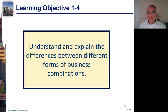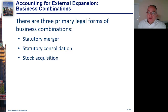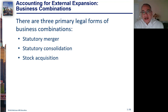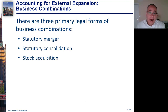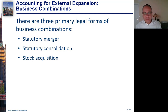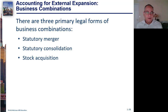Learning Objective 1-4: understand and explain the differences between different forms of business combinations. There are three different legal forms of business combinations: statutory merger, statutory consolidation, and a stock acquisition. This is a CPA exam question, so we'll go through these in some detail to understand how these work.